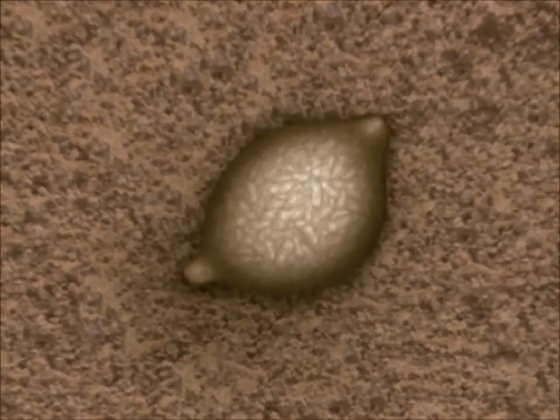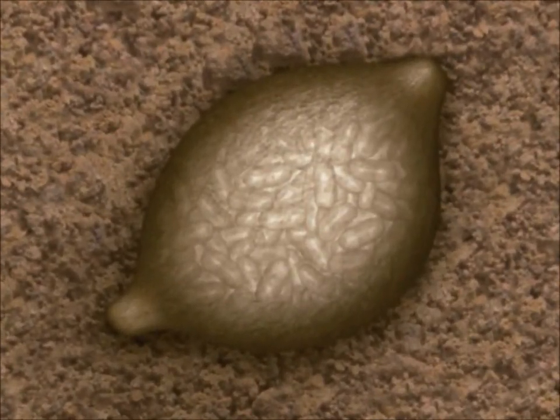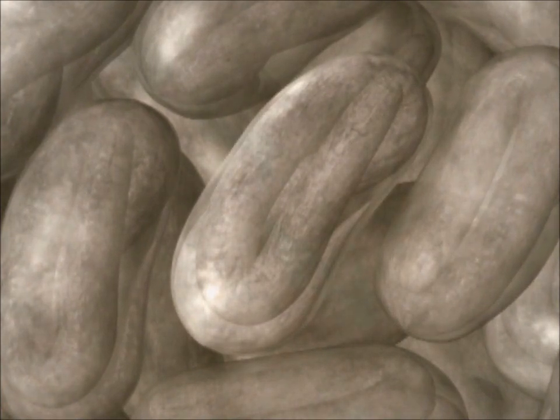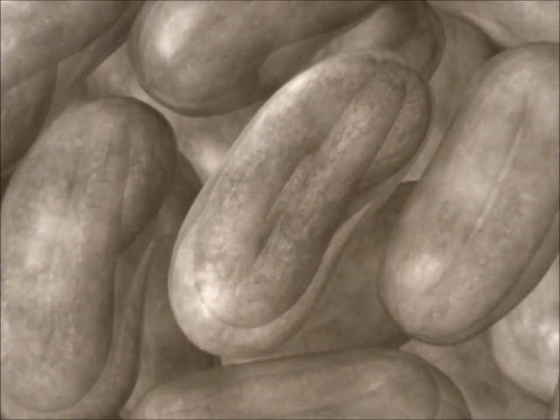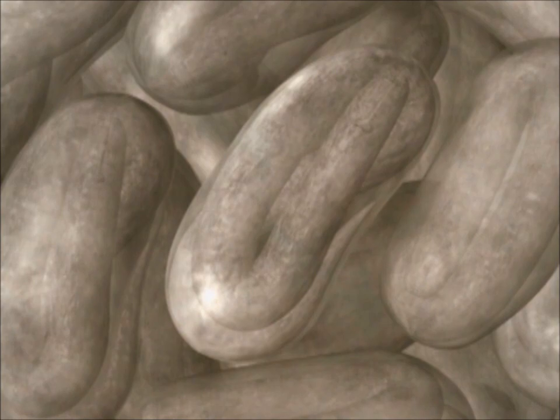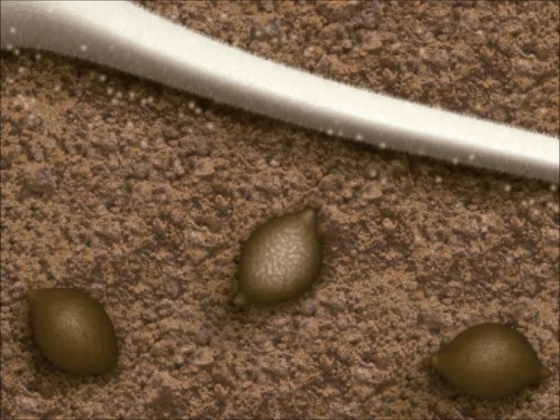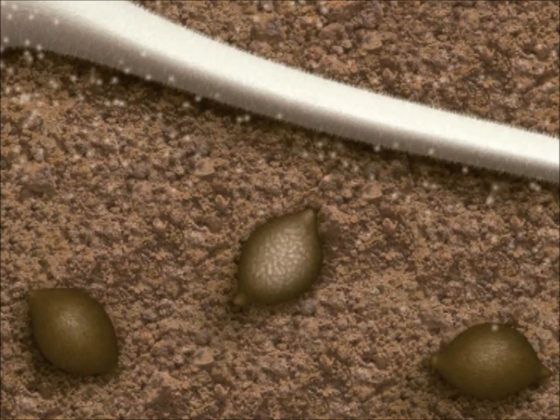These cysts often contain hundreds of eggs. Each egg contains an infectious juvenile of the nematode Heterodera schachtii. Substances released by the roots of the young sugar beet plants stimulate hatching of the juvenile nematodes.